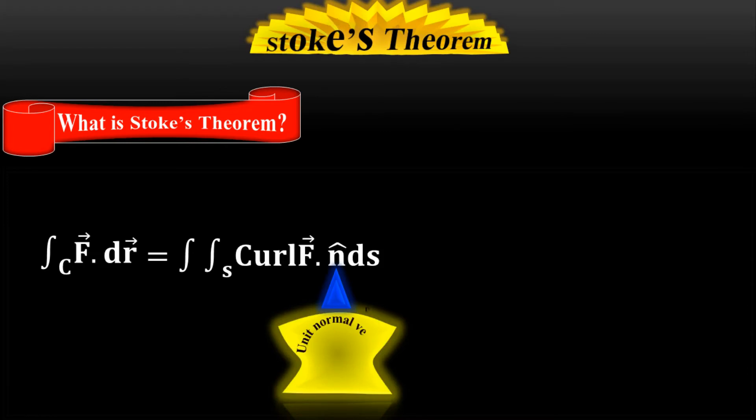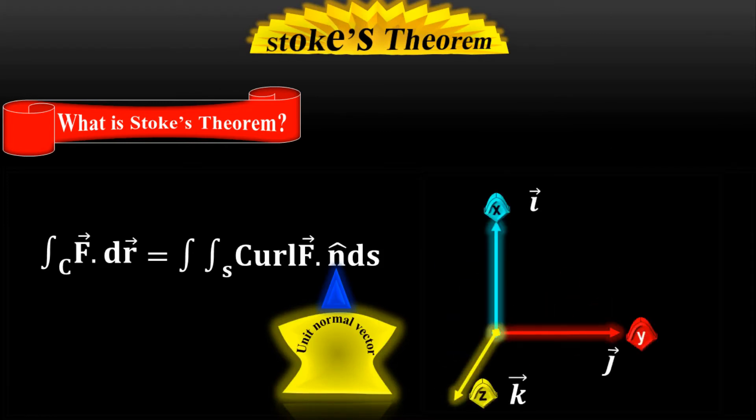And n-cap is a unit normal vector. Let me draw x, y, z plane again. These are the unit normal vectors i, j, and k. i is along x axis perpendicular to y, z plane. j is along y axis perpendicular to x, z plane. k is along z axis perpendicular to x, y plane.